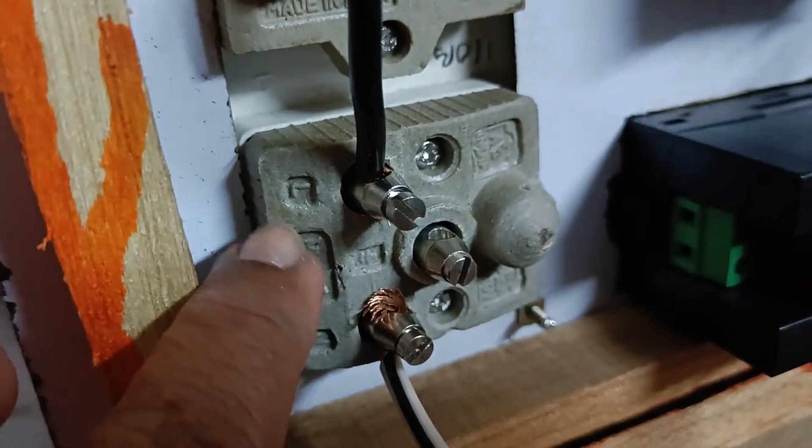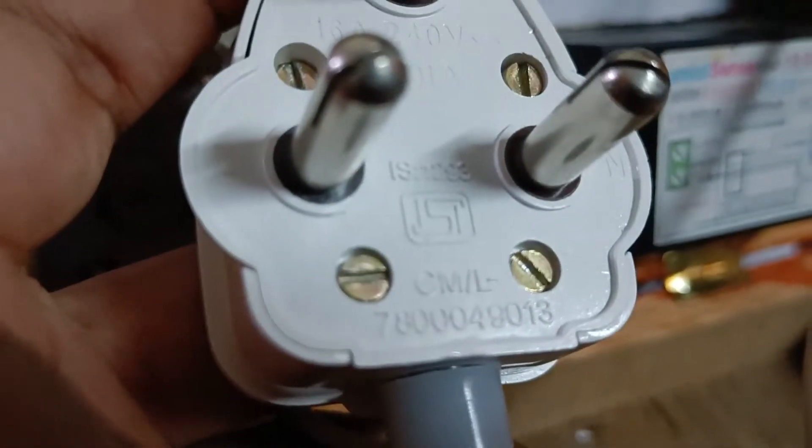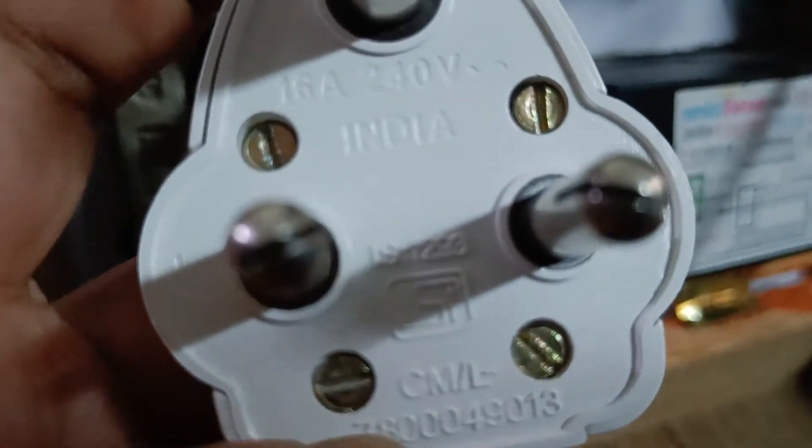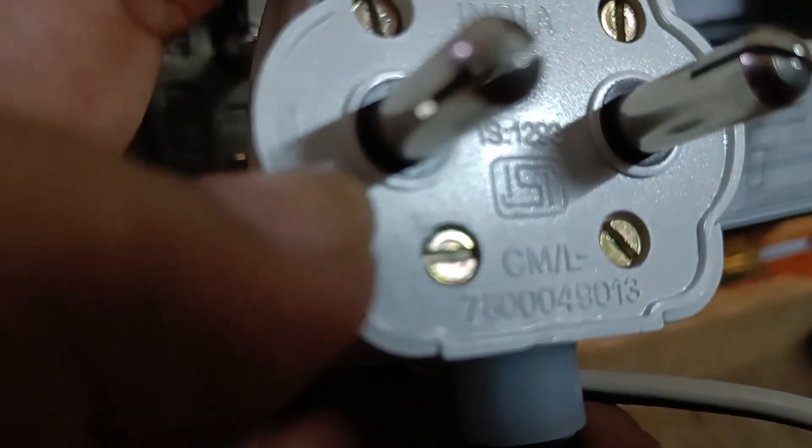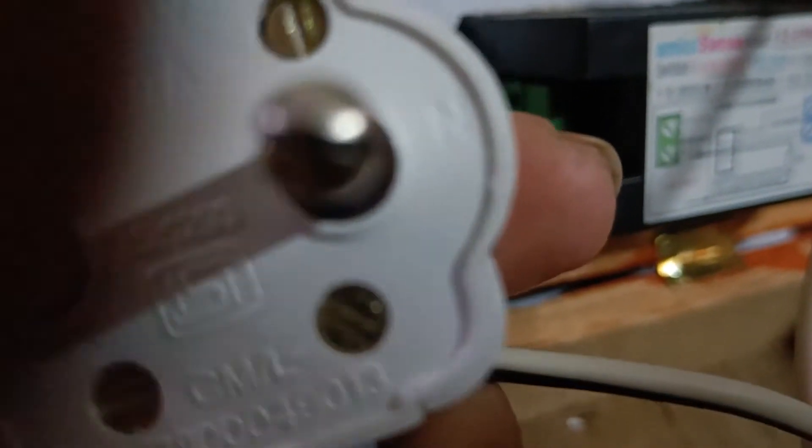The way this plug should be connected to the male plug is: this L or line should be coming to the line of this plug. Here also you can see the L, in this case it is here, and then the opposite side will be neutral.